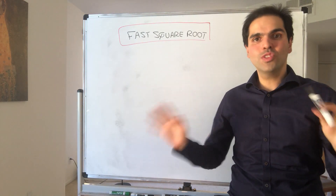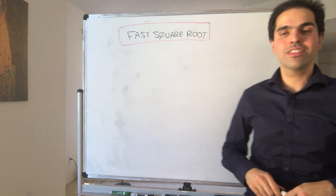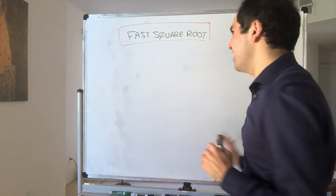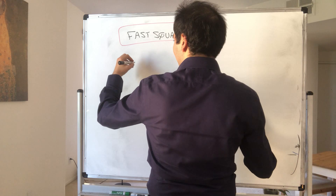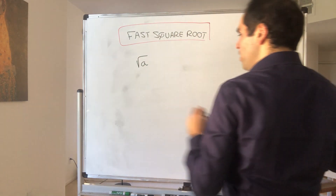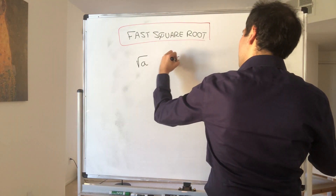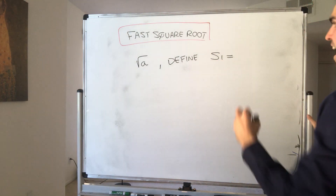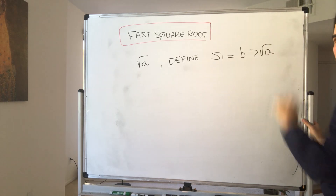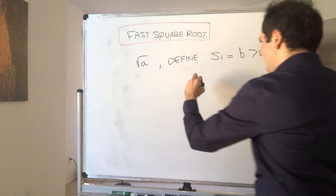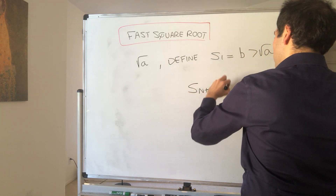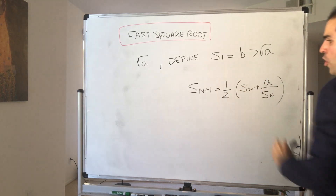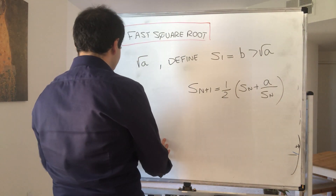Thanks for watching. Today I will show you a super fast way of computing square roots — the way the Babylonians did it, without using a calculator. So suppose you want to calculate the square root of a. Define the sequence s_n where s_1 is any number bigger than the square root of a, and then define the next term to be one-half the average of our current term and a over our current term.